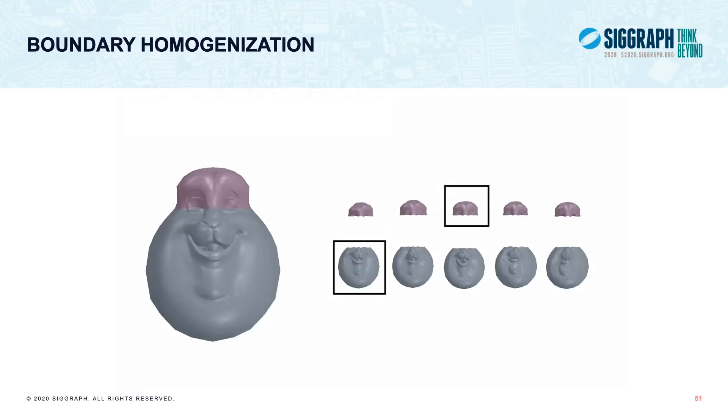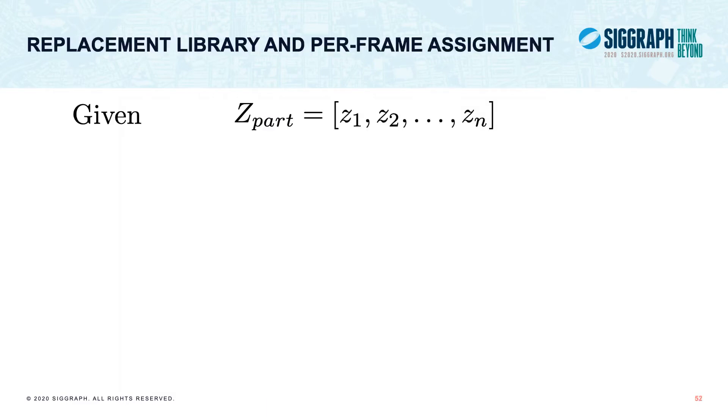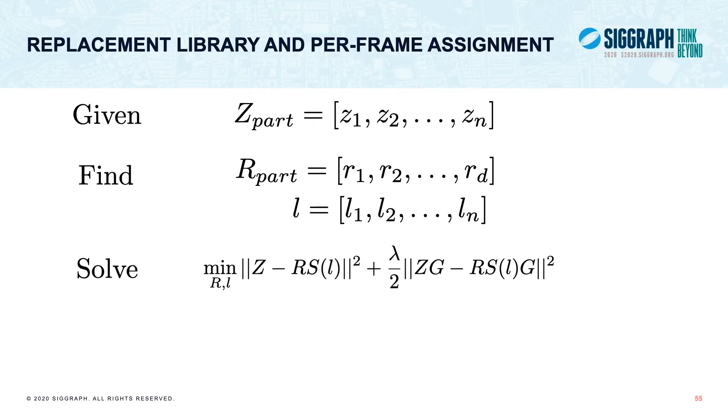Splitting the mesh into multiple parts and homogenizing the boundary between them allows us to freely mix and match different poses for each part while maintaining continuity across the part boundaries. This allows us to magnify the expressive range that we can achieve while minimizing the amount of material needed for 3D printing. We now focus on determining the pieces that compose the replacement library of each part and a per-animation frame assignment of pieces from these libraries to reconstruct the input mesh animation sequence faithfully. Given mesh animation of a single part, we want to find a replacement library of D pieces and a sequence of n labels assigning each input frame to a corresponding piece from the library.